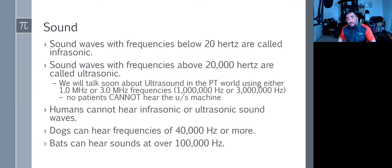Sounds with frequencies below 20 hertz are called infrasonic. Sound frequencies above 20,000 hertz are called ultrasonic. We'll talk about ultrasound in the PT world using either one megahertz or three megahertz frequencies. We cannot hear either infrasonic or ultrasonic sounds. Dogs can hear up to 40,000 hertz or more, and bats can go over 100,000 hertz. Bats and certain animals operate by echolocation.